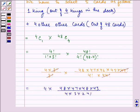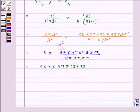Which can be further simplified as, we are left with 4 into 2 into 47 into 48 into 45, which is 778,320.